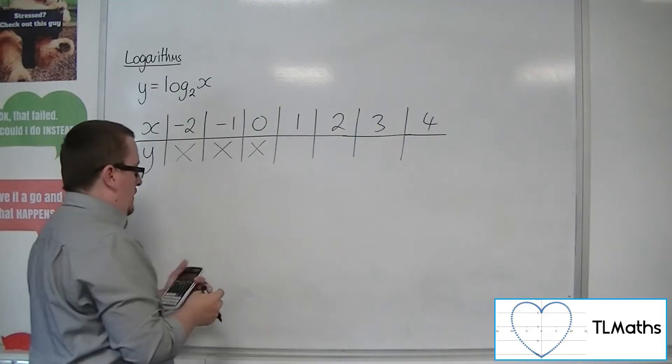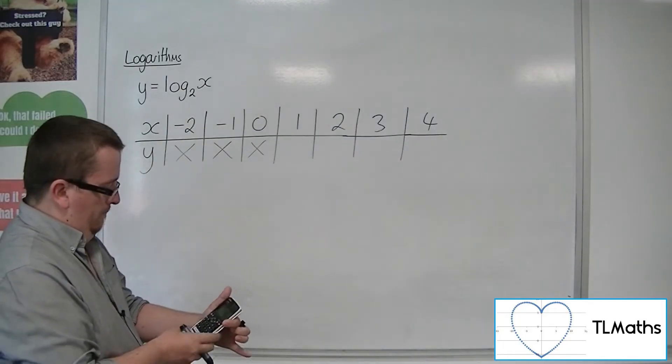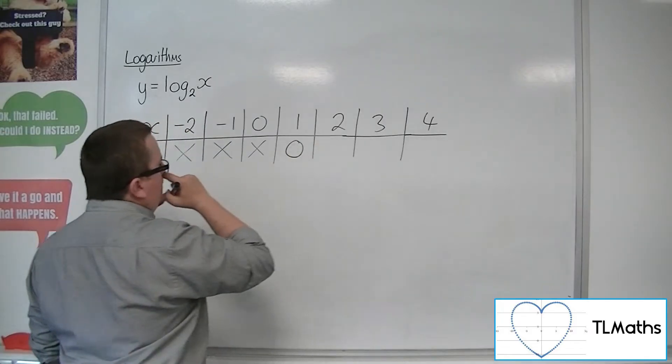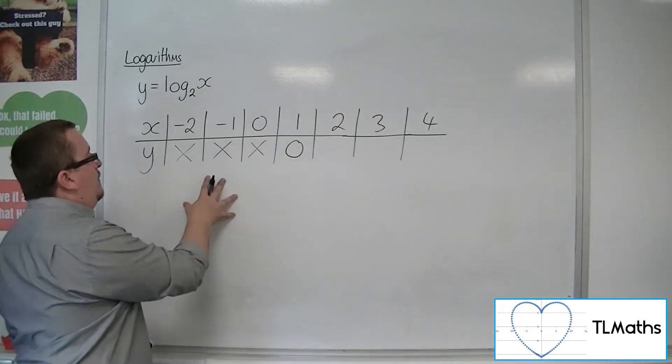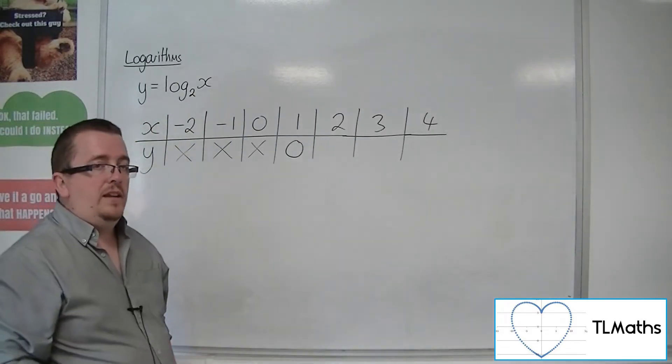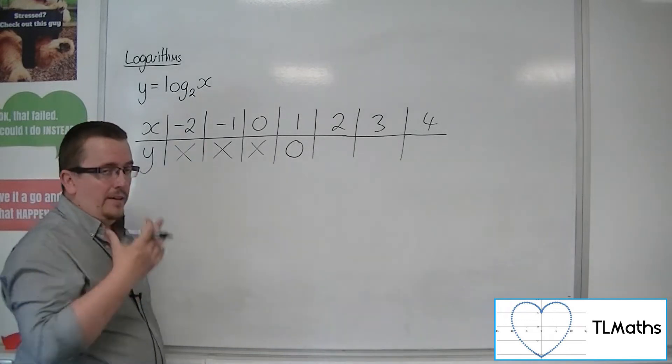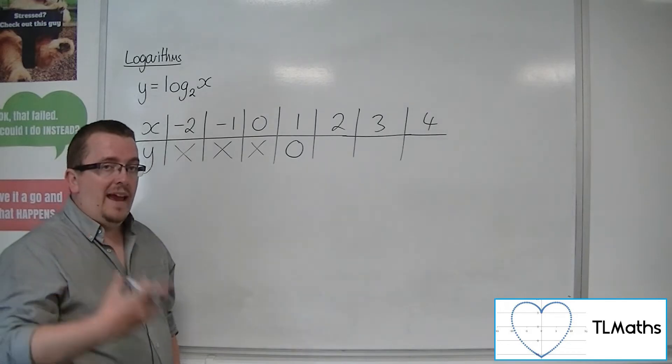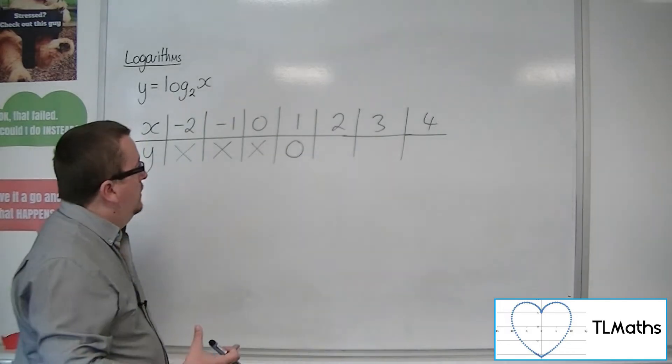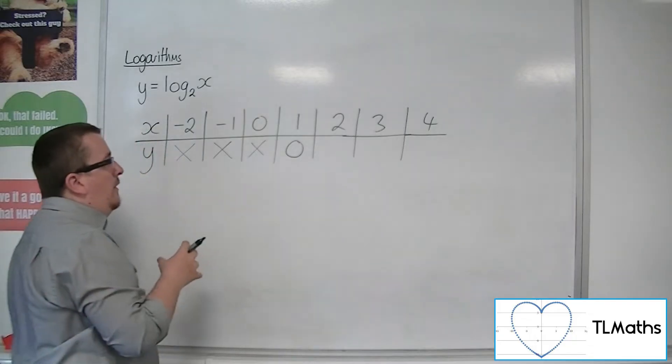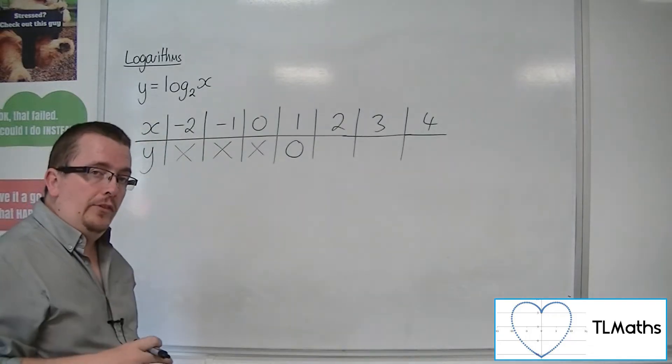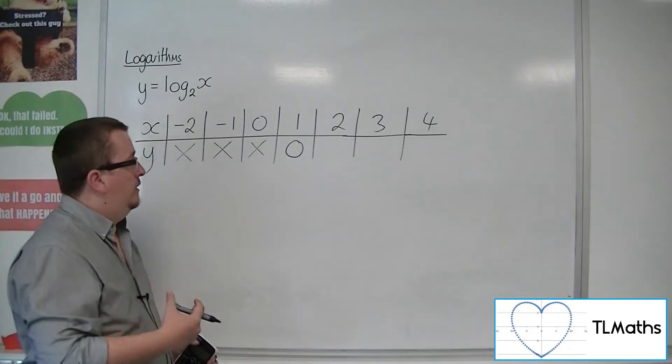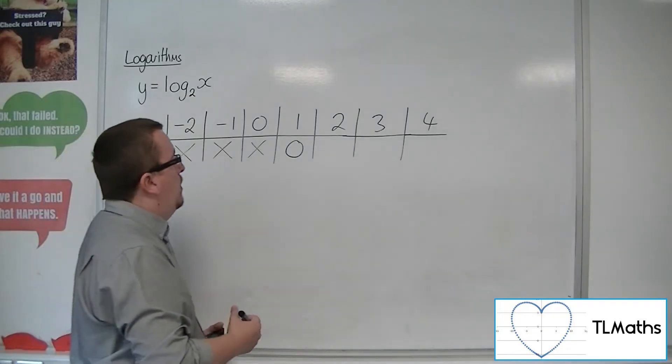See when you get a trend here. Let's try 1. Ah, we get 0. Right, so something is happening here with negative values and 0 as well, such that we cannot seem to get any values for them. So actually what we'll find is that the curve does not exist on or to the left of the y-axis. Okay, so it only exists to the right of the y-axis.